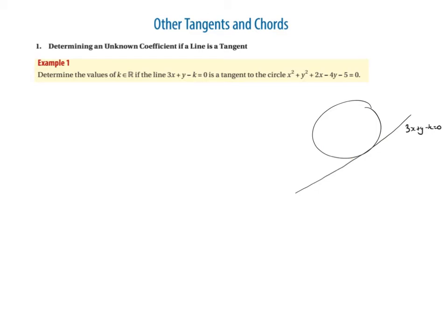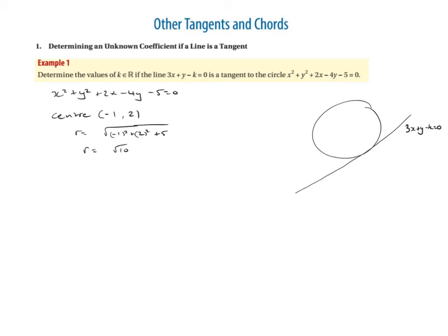The circle is x² + y² + 2x - 4y - 5 = 0. The center — remember we just look at the coefficients, halve them and change the sign — so that's going to be (-1, 2). The radius is given by the square root of (-1)² + 2² - c, so that's minus (-5) which is +5. The radius is equal to √(1 + 4 + 5) = √10.